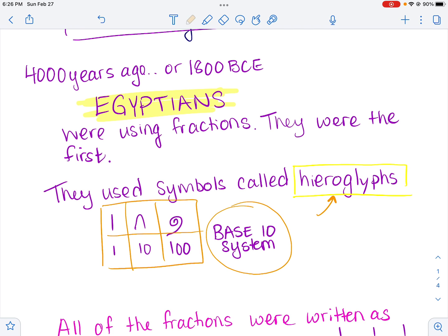They had these symbols. So for example, this, I think it was like a staff, was used to represent the number one. This symbol represented the number 10. And a symbol like this represented 100. And they'd have symbols for 1,000, 10,000, etc.